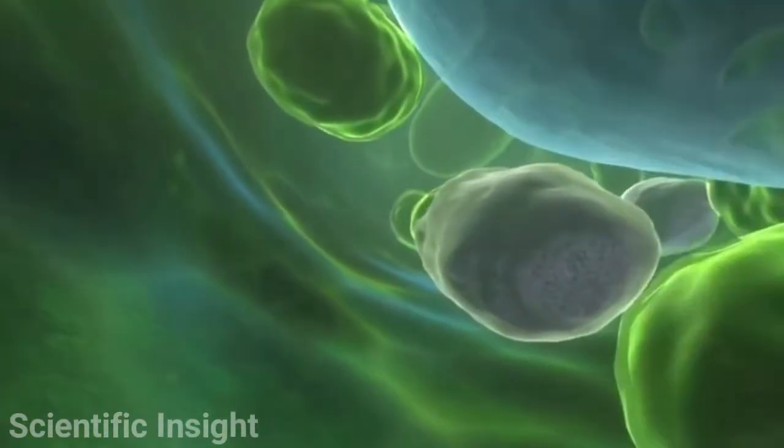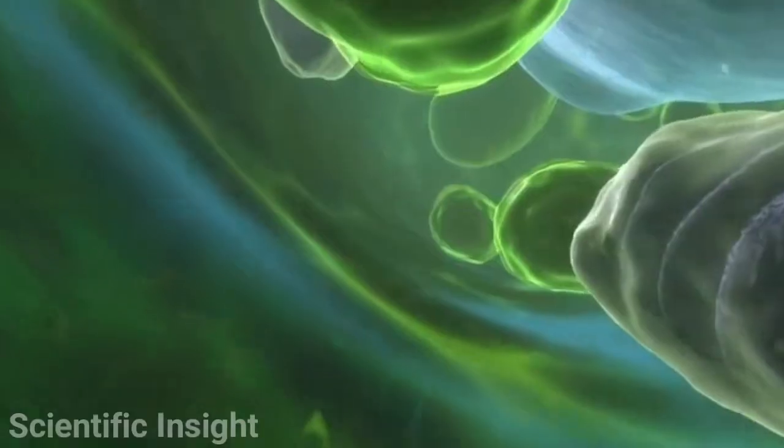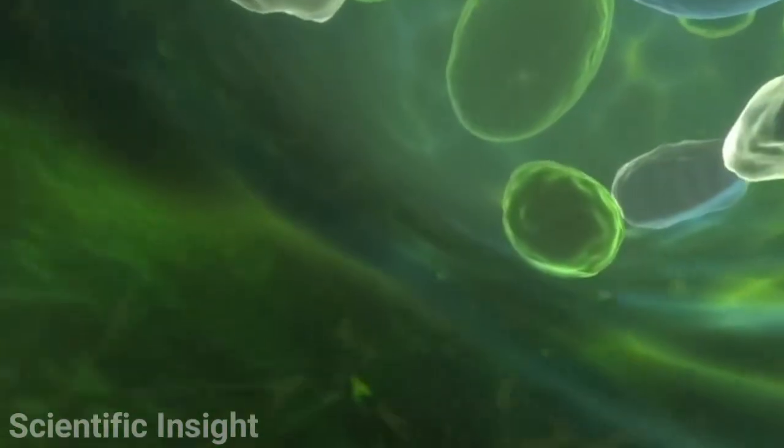The faint yellow spiderweb structure of the cytoskeleton provides structure and support to the cell.